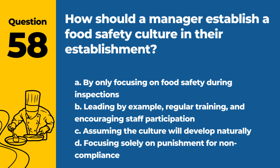Question 58. How should a manager establish a food safety culture in their establishment? A. By only focusing on food safety during inspections. B. Leading by example, regular training, and encouraging staff participation. C. Assuming the culture will develop naturally. D. Focusing solely on punishment for noncompliance. Answer: B. Establishing a food safety culture requires active leadership, continuous training, and engaging staff in food safety practices.